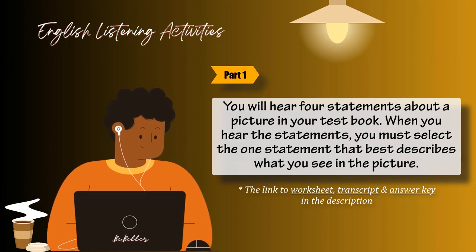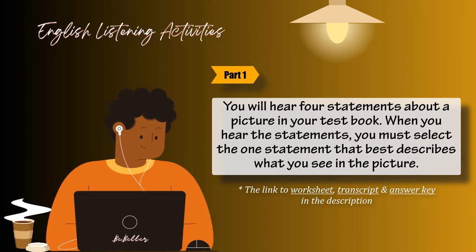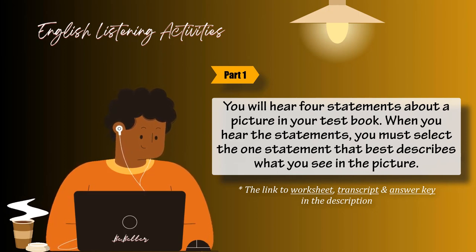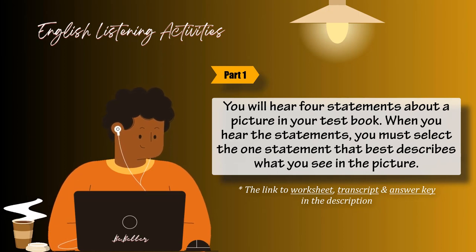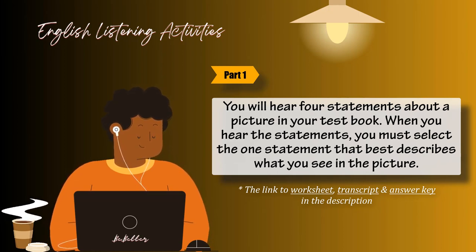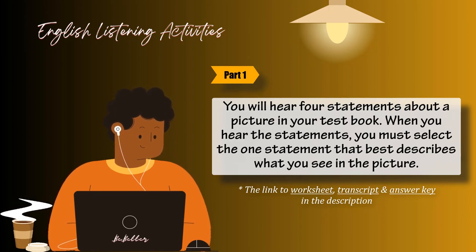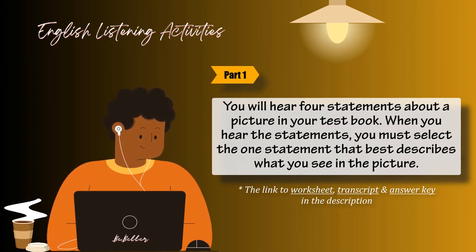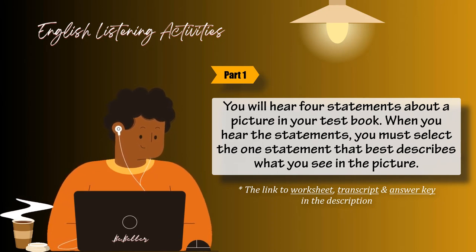Number 5. Look at the picture marked number 5 in your test book. A: Some people are sipping from their cups. B: One of the men is pouring coffee into a cup. C: Some people are seated around the table. D: The chairs are piled up beside the entrance door.